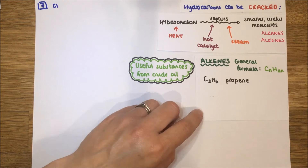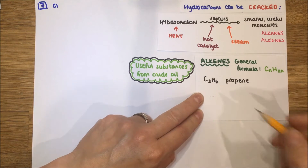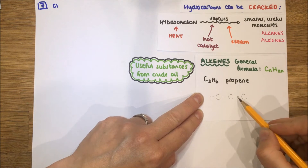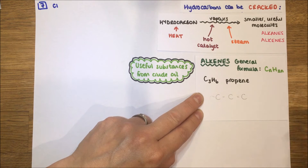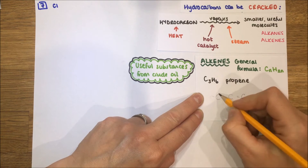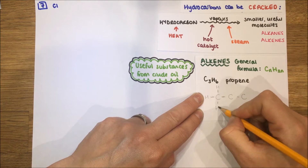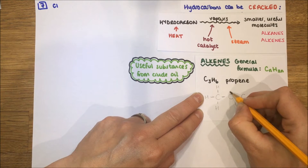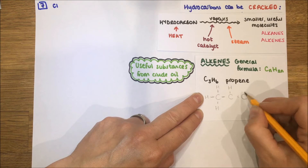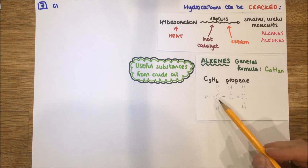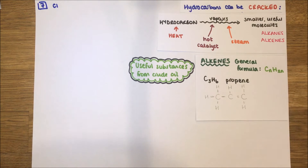Let's look at propene as an example, because you may be required to draw it in your exam. If we have three carbons, one of which has a double bond — remember carbon can only form four bonds because it has four electrons in its outer shell. We fill the remaining bonds with hydrogen. That gives us three carbons and six hydrogens, which fits the formula CnH2n: three carbons, six hydrogens — correct.